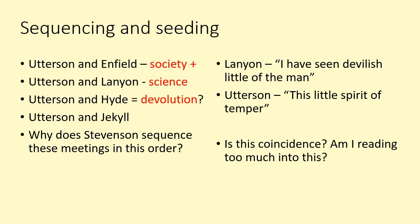I modelled my own thinking: that Enfield represents the bad elements of society that Jekyll is interested in, that Lanyon is a scientist, and if you add those two things together you get Mr. Hyde and devolution. Then a student came up with a theory — which I was very jealous of — that it was like a series of Russian dolls: bad behaviour in society, science, and Hyde himself are all inside Jekyll, like a sequence of Russian dolls.